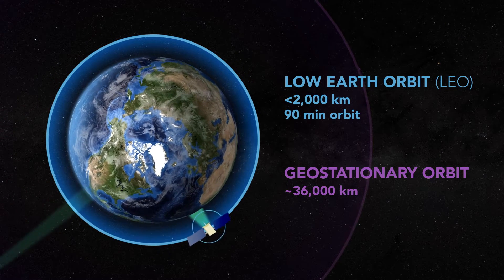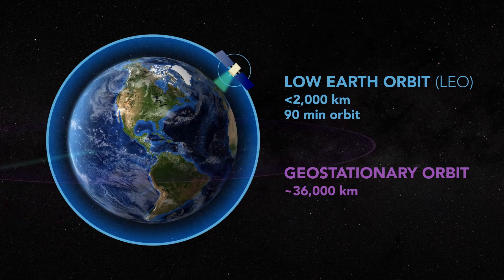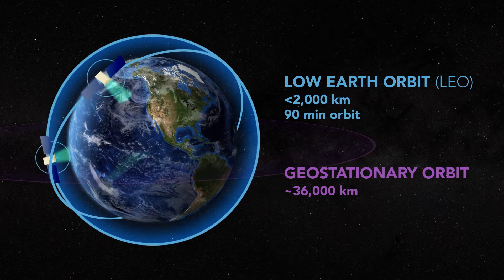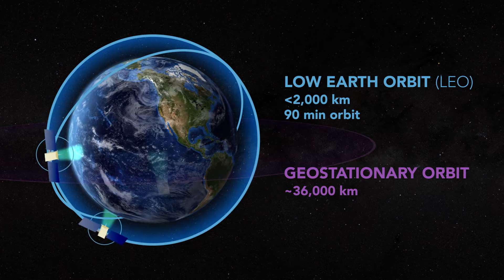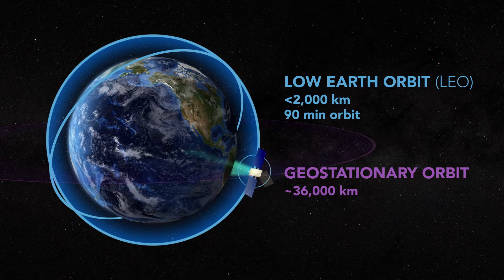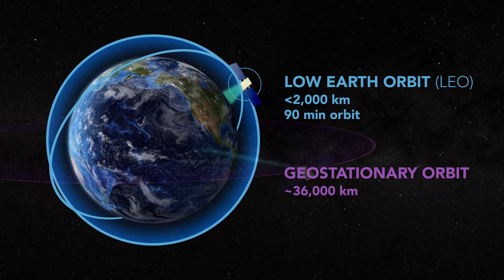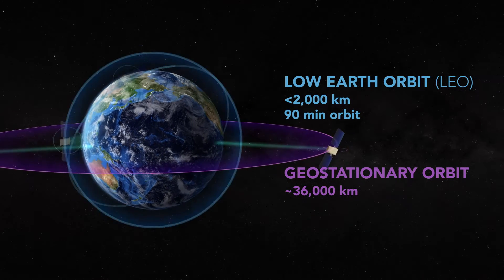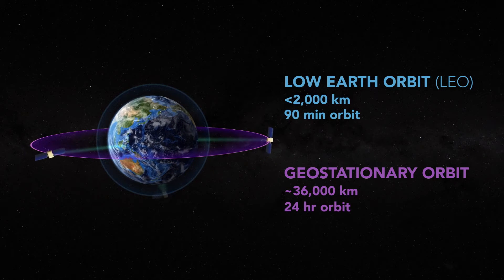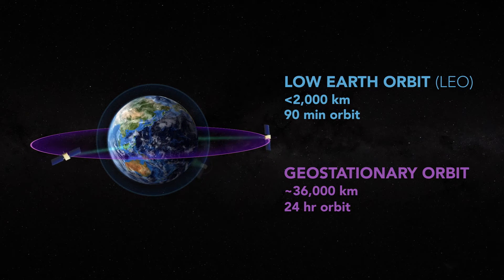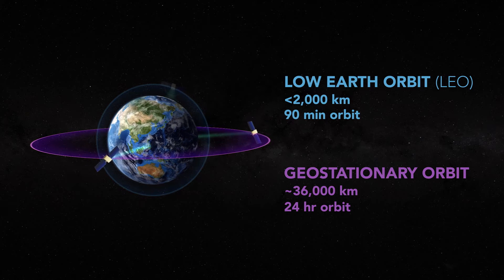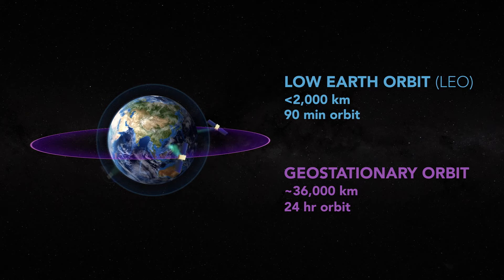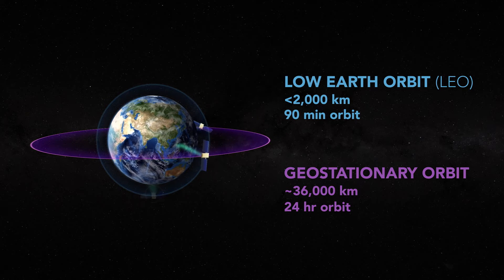Satellites in LEO typically make it around the planet quickly and see a sunrise every 90 minutes or so. Although many LEO satellites orbit from pole to pole, some of them have lower inclination angles, so they can focus more frequent observations over a particular latitude range. Geostationary satellites orbit at the same speed as the Earth's rotation and stay over one spot, and thus experience sunrise at the same time the point below it does.